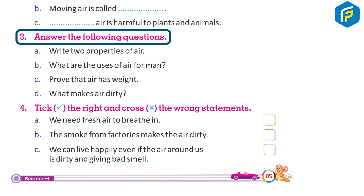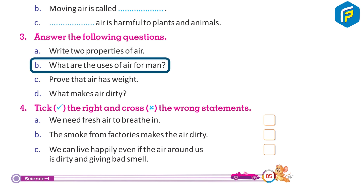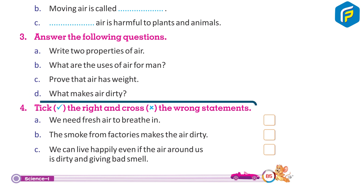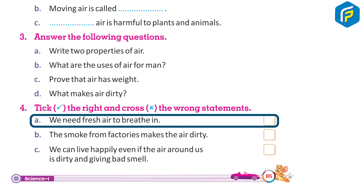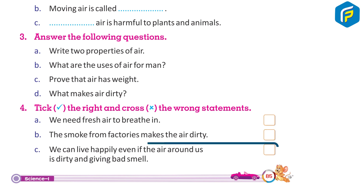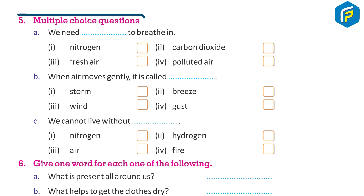Answer the following questions: a) Write two properties of air. b) What are the uses of air for man? c) Prove that air has weight. d) What makes air dirty? Take the right and cross the wrong statements: a) We need fresh air to breathe in. b) The smoke from factories makes the air dirty. c) We can live happily even if the air around us is dirty and smells bad.